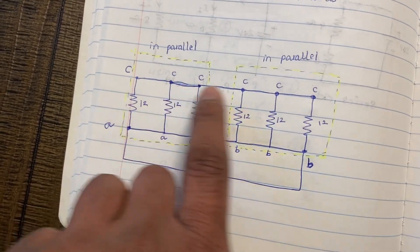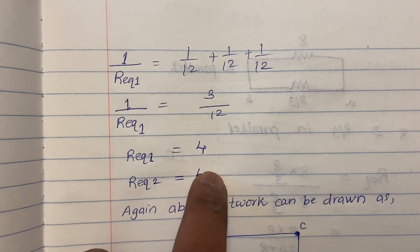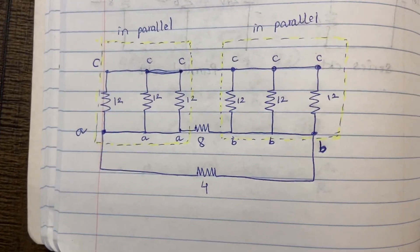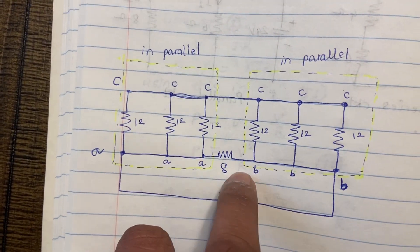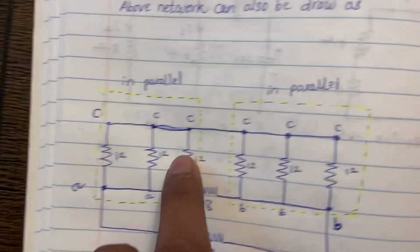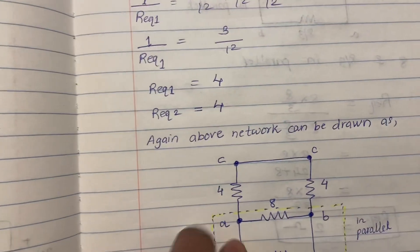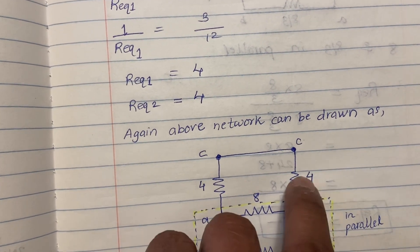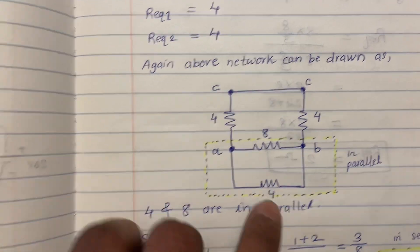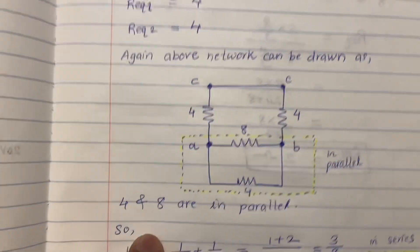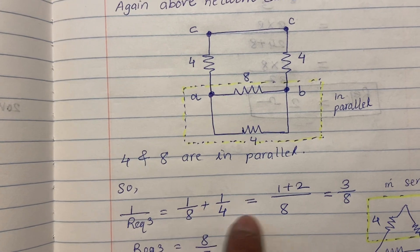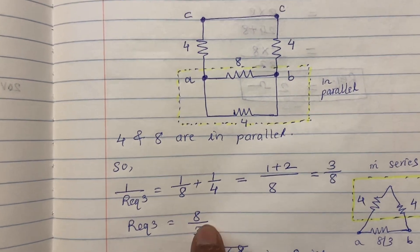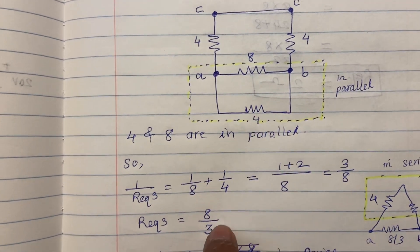Similarly, the same calculation applies to the other side, so that also becomes 4Ω. Now redrawing the network with these 4Ω equivalents: we have 8Ω across A and B, 4Ω from C to A, and 4Ω from C to B. The 8Ω and 4Ω resistances at this node are in parallel, giving an equivalent of 8/3Ω by the parallel formula.